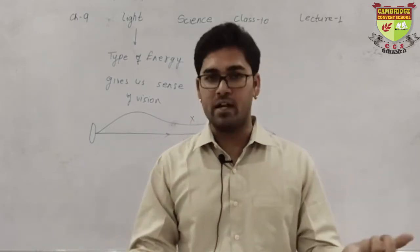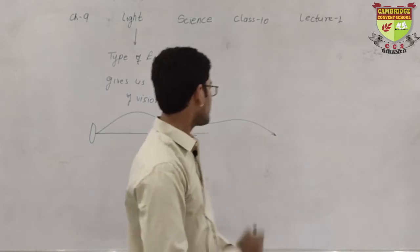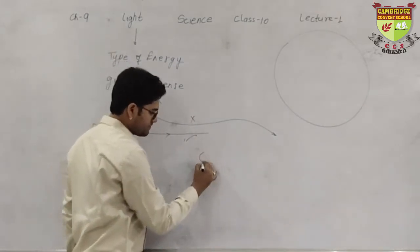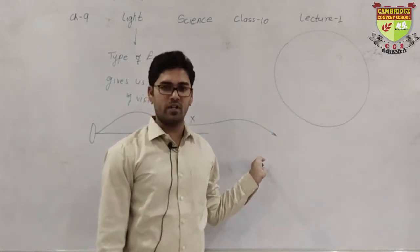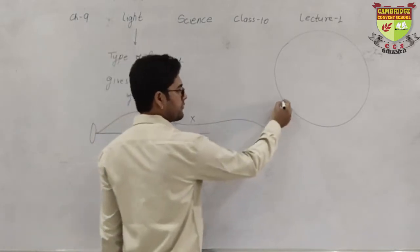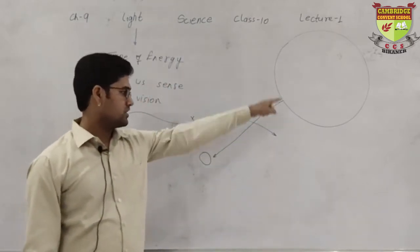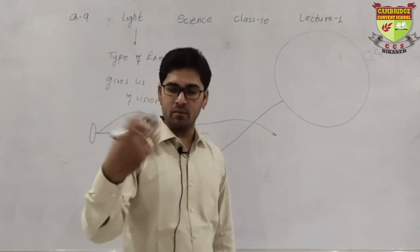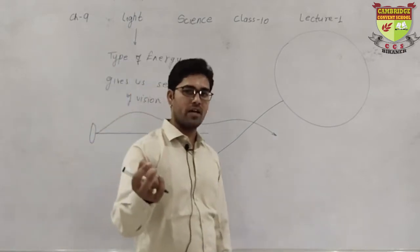But that is not the case with light. If there is medium, light will travel. If there is no medium, in spite of it, light will travel. Let me give you an example. There is sun, a big source of light. This is earth. What is there between sun and earth? Is there any air, any solid, liquid, nothing? There is vacuum. In spite of that, light from sun reaches to the earth because light does not require any medium to travel.